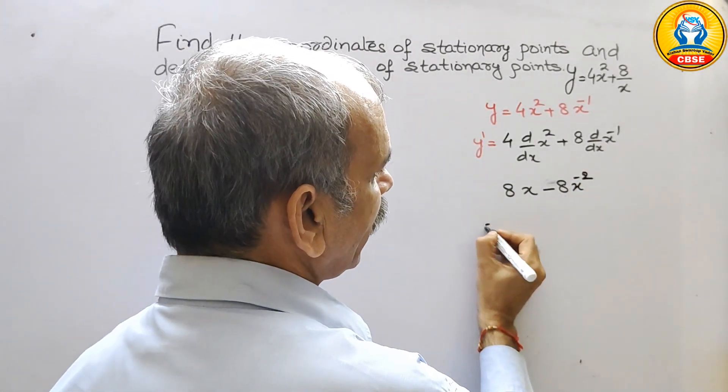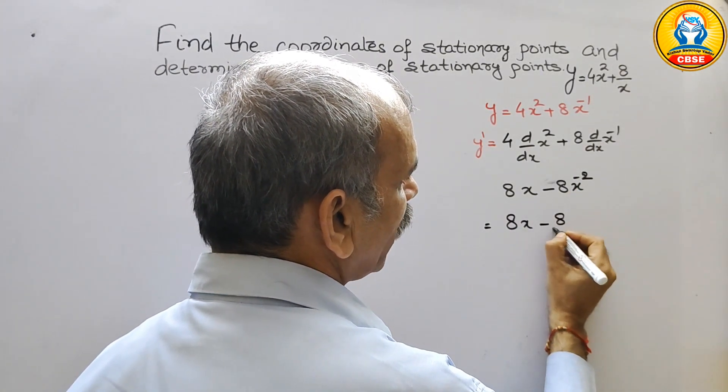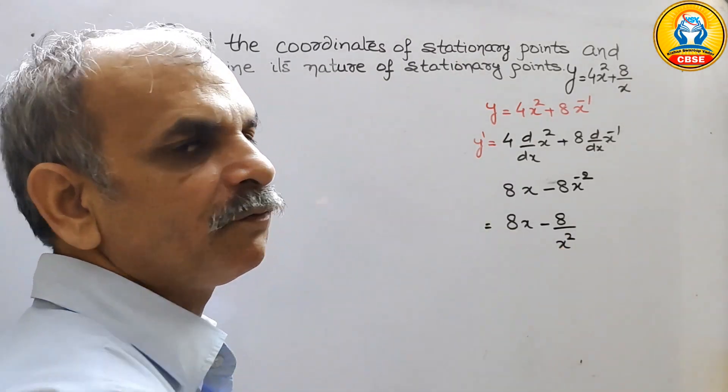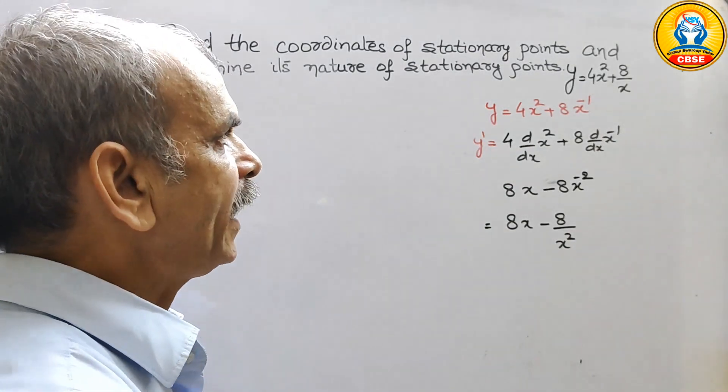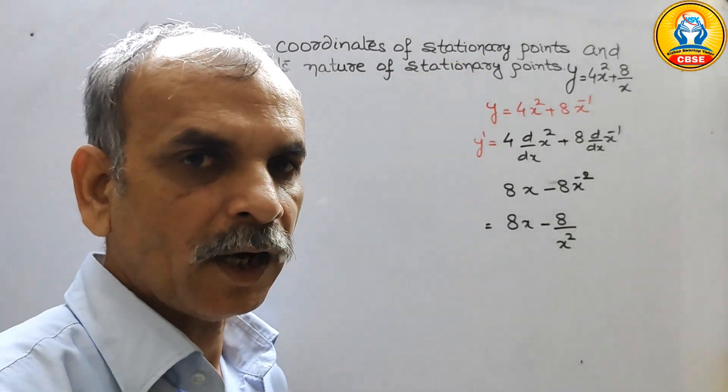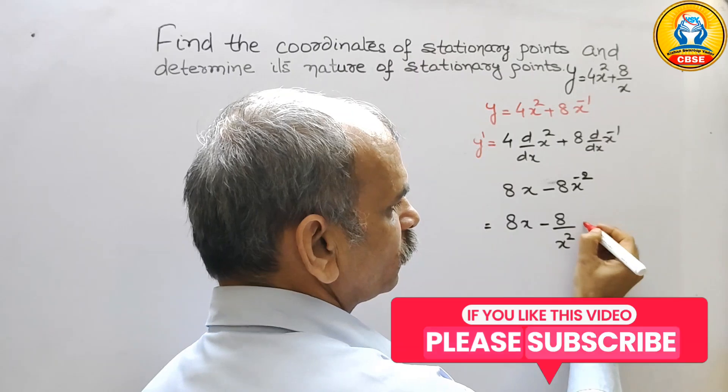Again we will rewrite it. It will be 8x minus 8 by x square so this is the differentiation. Now they have told us that we have to take out the stationary point. For that we have to take this as 0.